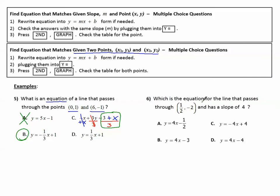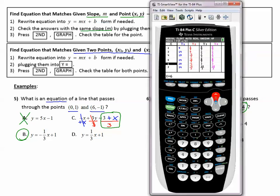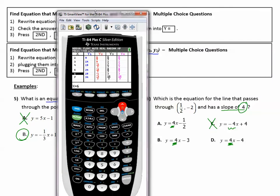Number 6. Which is the equation for the line that passes through the point 1 half, negative 2, and has a slope of 4? Well first thing to do when I'm looking at the given slope and a point is rewrite the equation into Y equals MX plus B if needed. And I see they are already in Y equals form. And then check the answers that have the same slope by plugging them into Y equals. Well, if the slope is supposed to be 4, and I know the slope is what is in front of the X, only these three are possibilities. This one has negative 4, and that is not correct. So let's go to our calculator and type in choices A, B, and D.